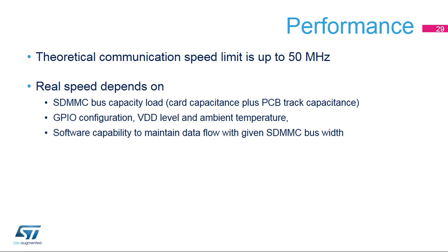Performance depends mainly on the SDMMC bus width and clock configuration. The SDMMC interface can generate clock signals up to 50 MHz, but real speed can be decreased by the application and depends on several factors. The SDMMC bus capacitance has to be considered as PCB track and card input capacity can play a significant role. GPIO settings also have an effect; fast GPIO mode should be applied on command, data, and clock signals. Lower power supply voltages and extreme ambient temperatures slow down the edges, and in some cases the application can't always manage fast data flows, especially due to overly frequent exception servicing or long time spent in interrupt handlers.